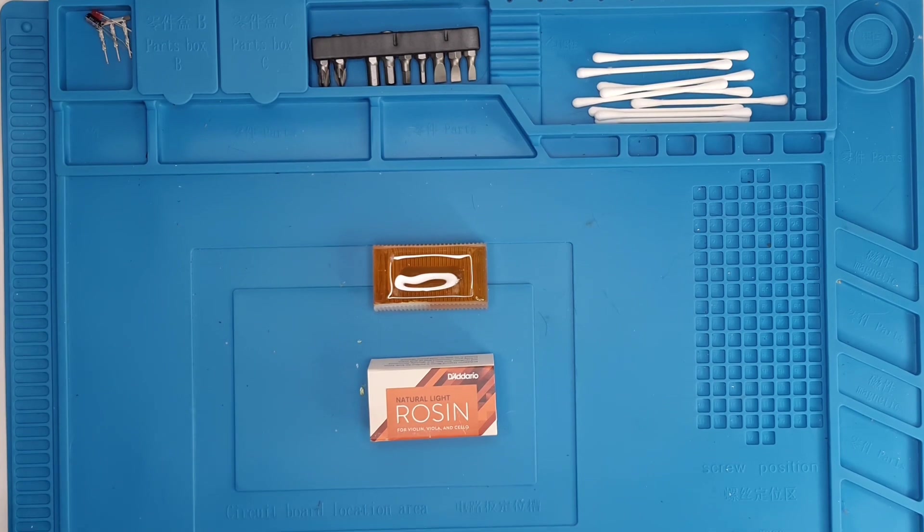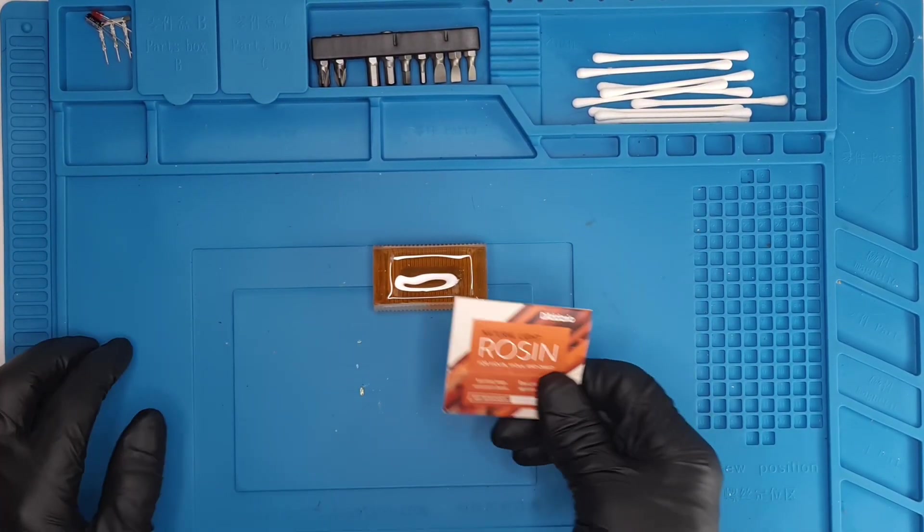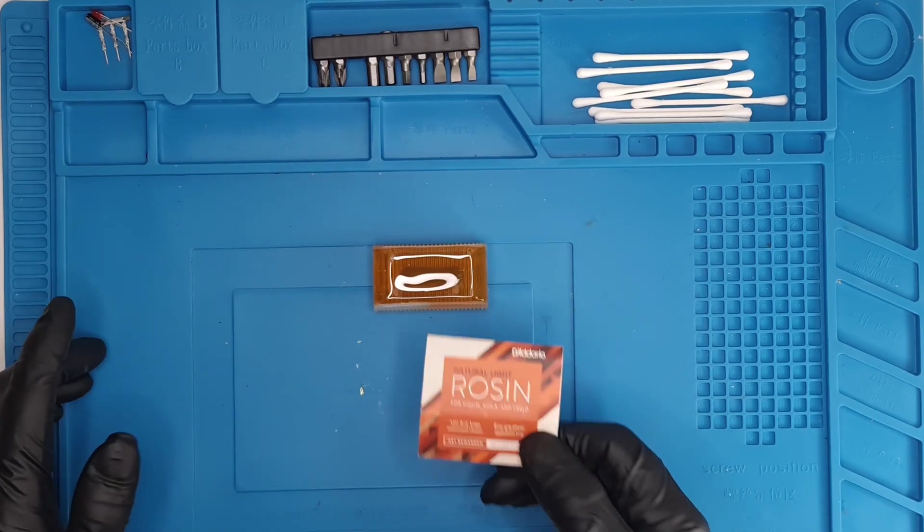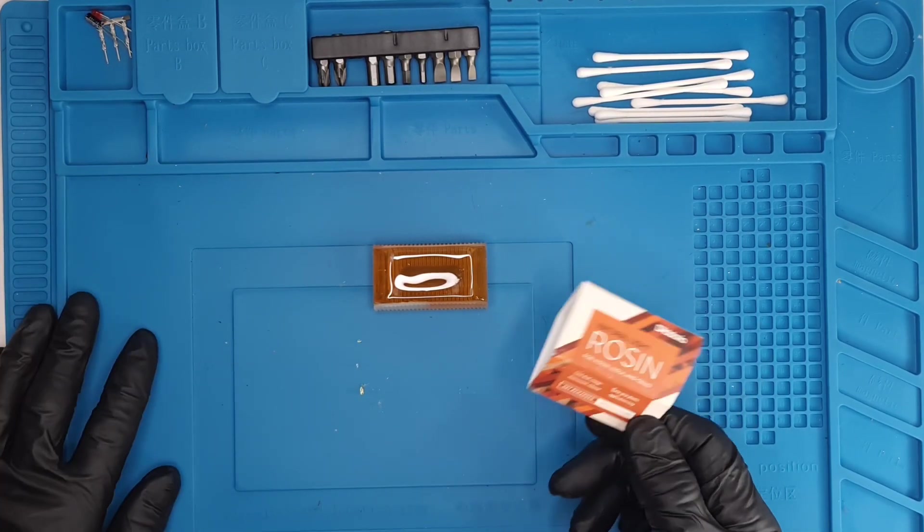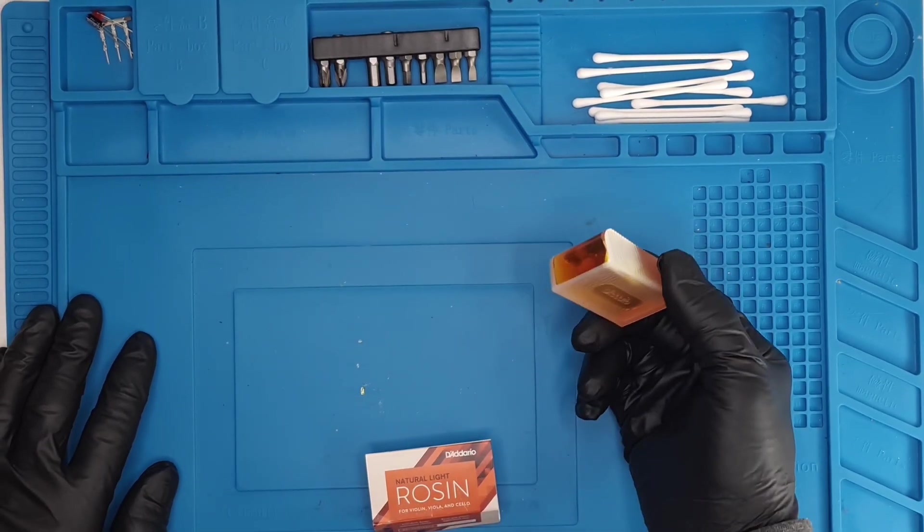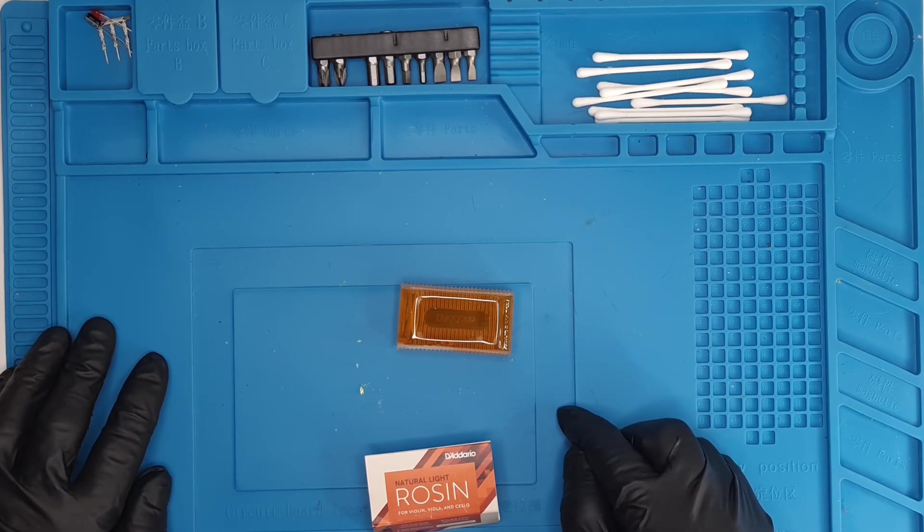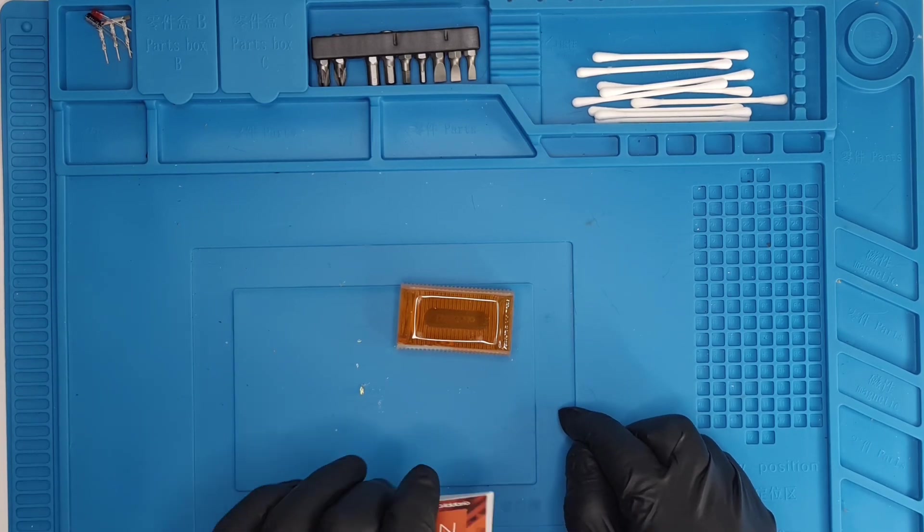Right, let's get started then. So the first thing you're going to need is rosin. Now this is quite cheap. You can buy it on eBay or Amazon. I got this on Amazon. It was a couple of quid, something like that because it's not a big piece. But you don't need nothing major size wise because it breaks up, crumbles up into quite small pieces. So that should be fine to keep me going for a while.